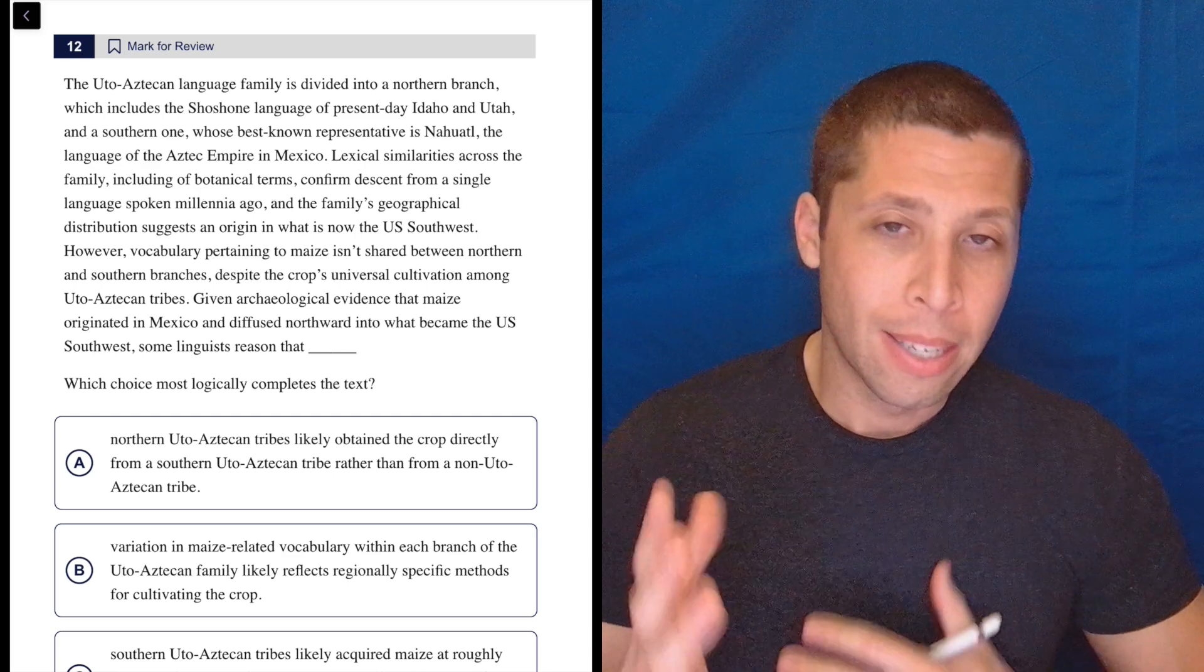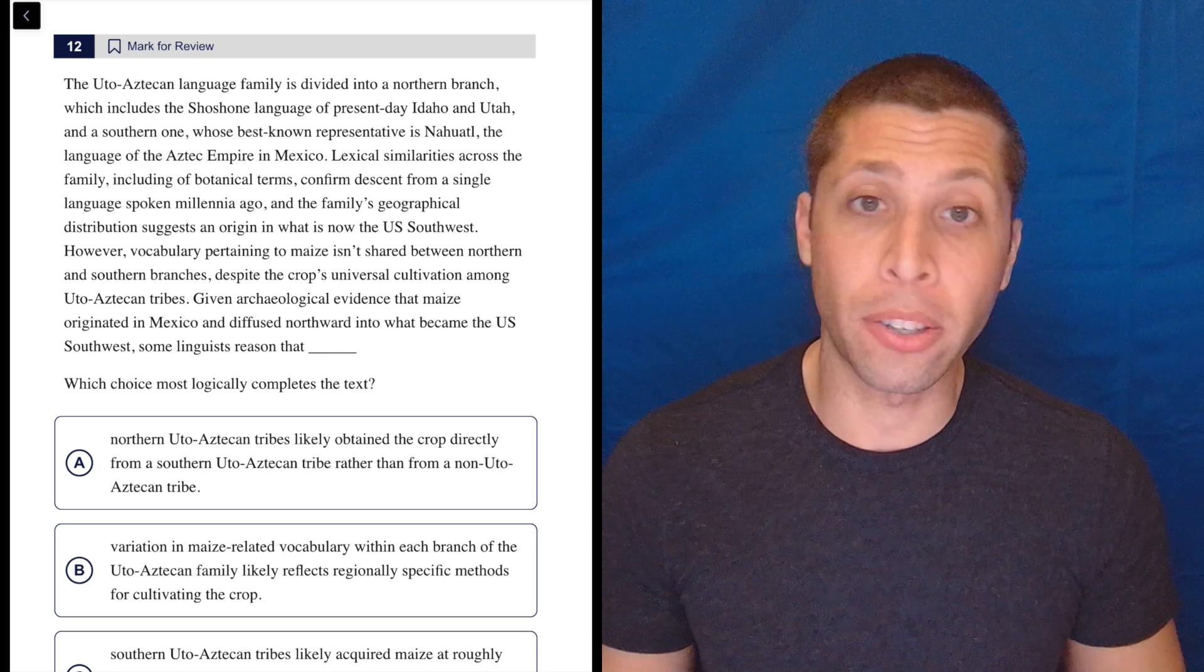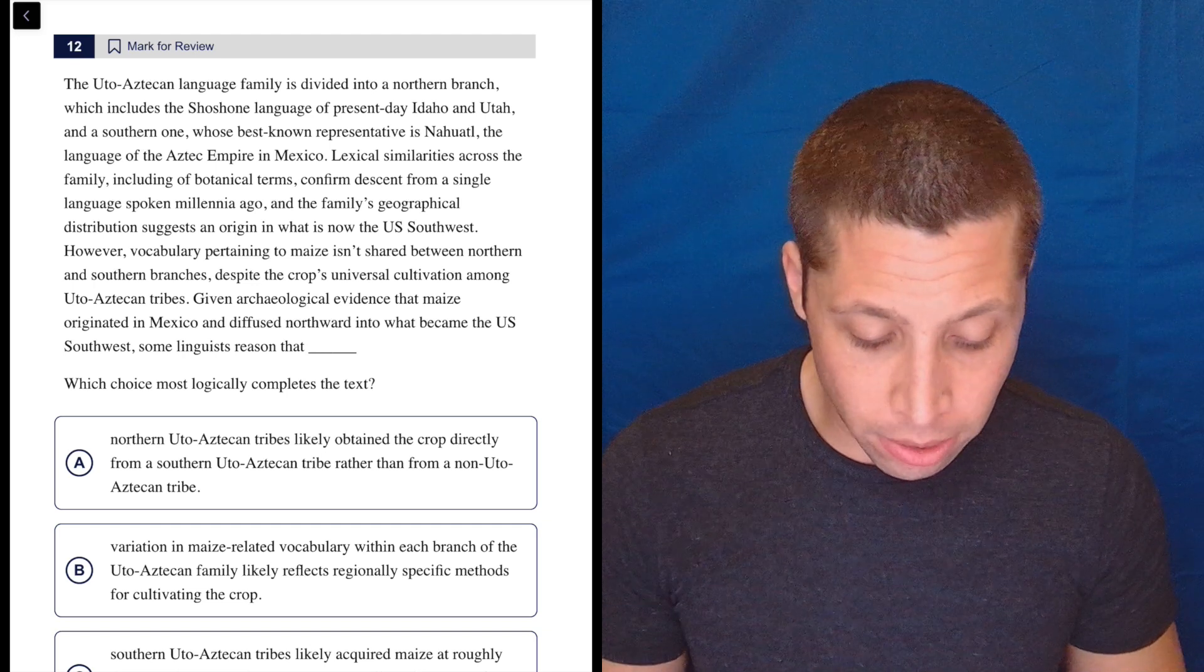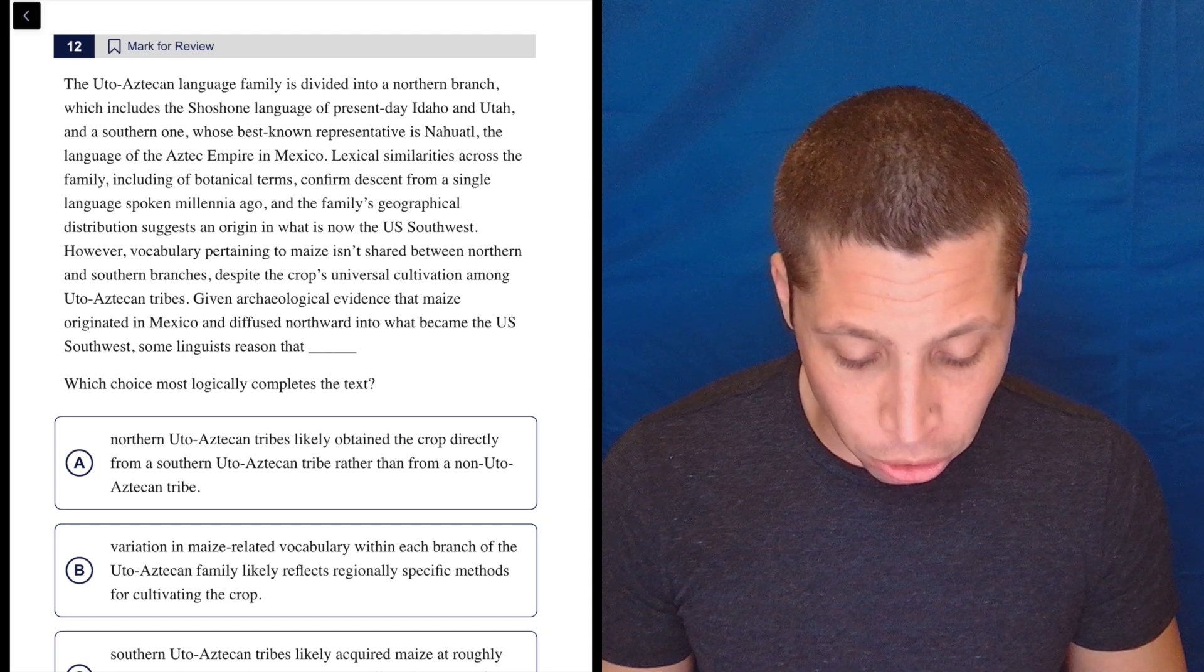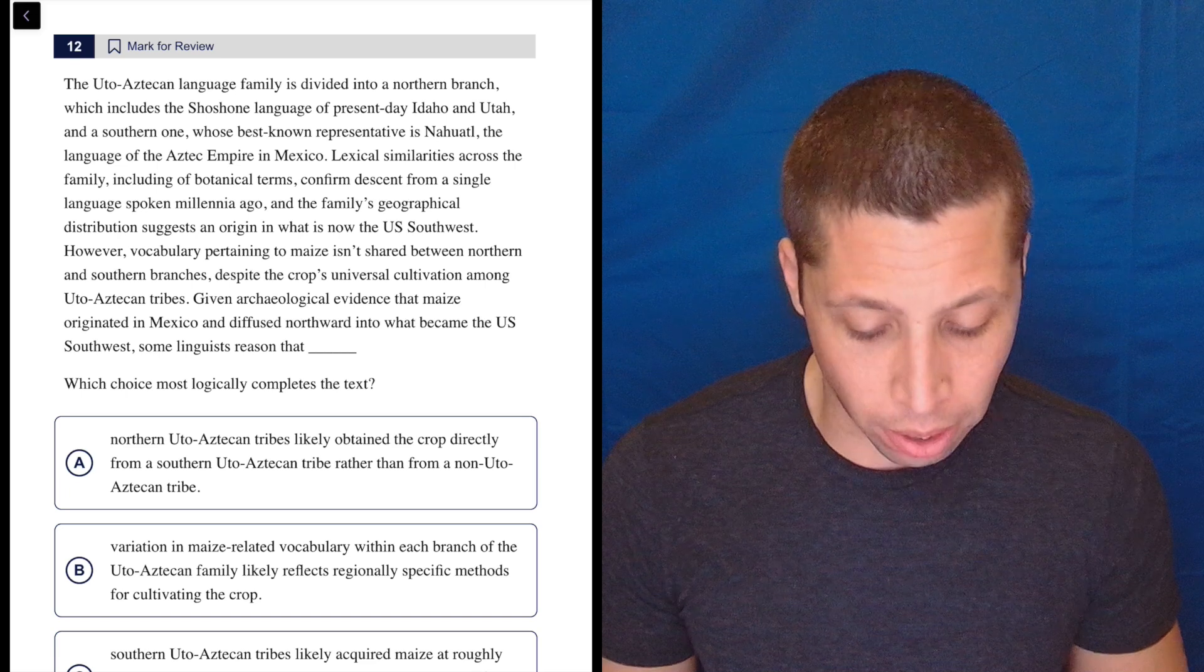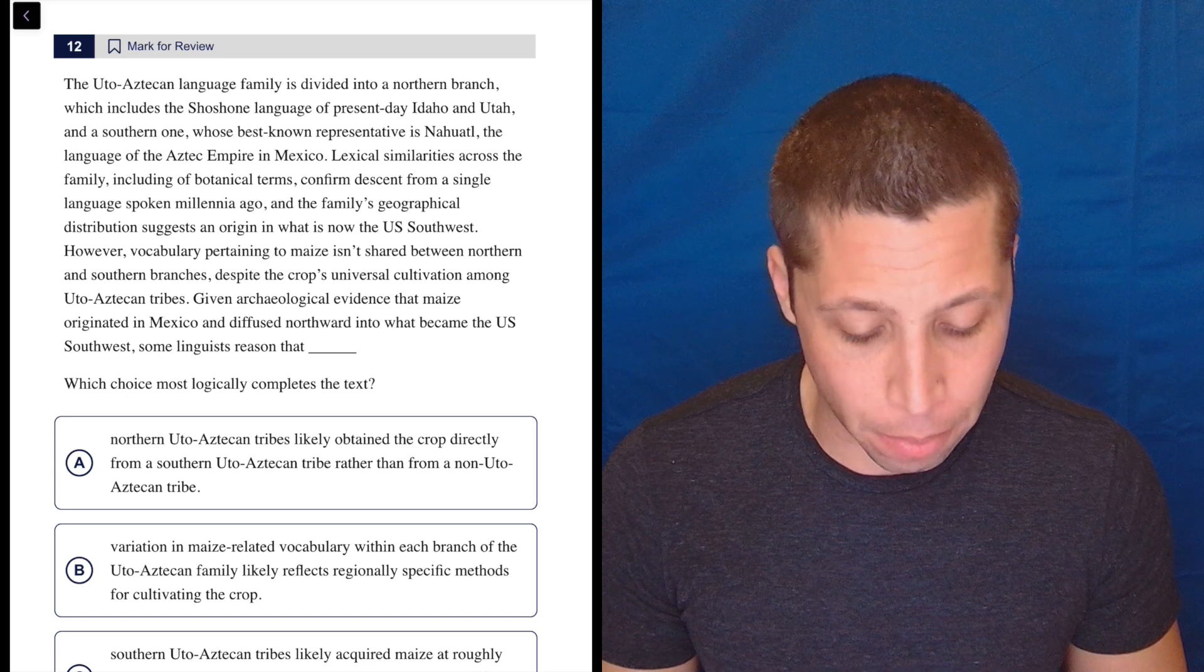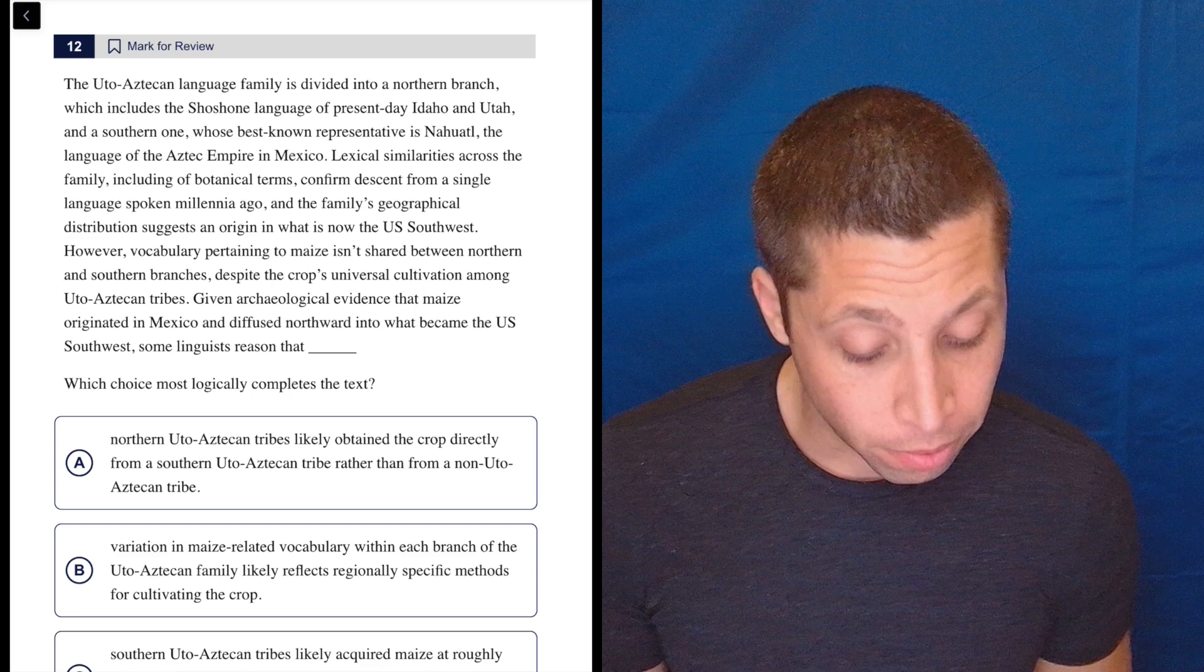Try to really focus on the relationships and the things that are shifting within the story. The Udo-Aztecan language family is divided into a northern branch, which includes the Shoshone language of present-day Idaho and Utah, and a southern one whose best-known representative is Nahuatl, the language of the Aztec Empire in Mexico. So there's two branches.